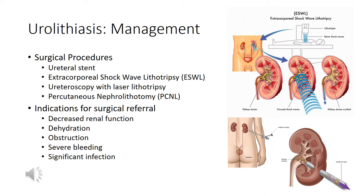Ureteroscopy with laser lithotripsy involves placing a ureteroscope through the urethra and threading a smaller scope up the ureter to blast the stone internally with a laser fiber. This is the gold standard for distal ureteral stones. Because the procedure is internal, a ureteral stent may be placed afterward to allow the ureter to heal and urine to flow freely; the stent is maintained for three to five days then removed in the office.